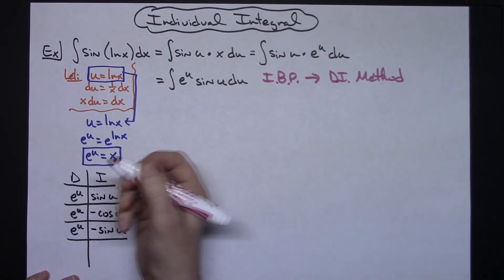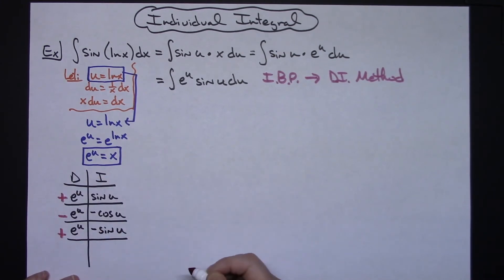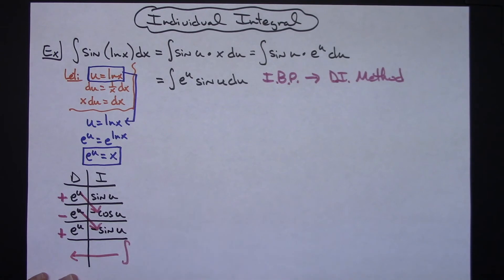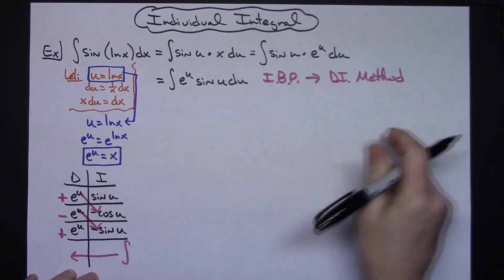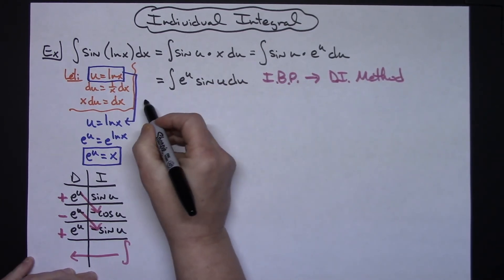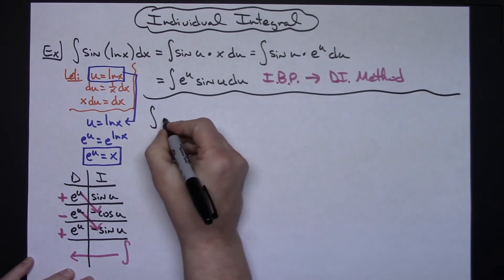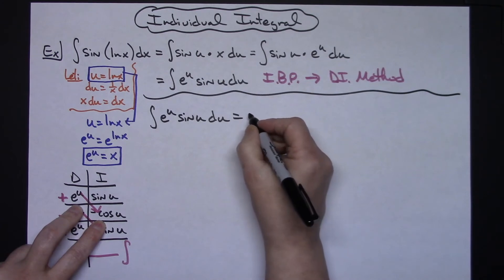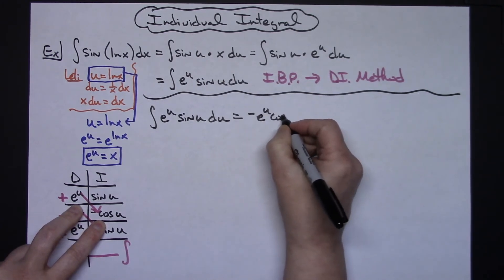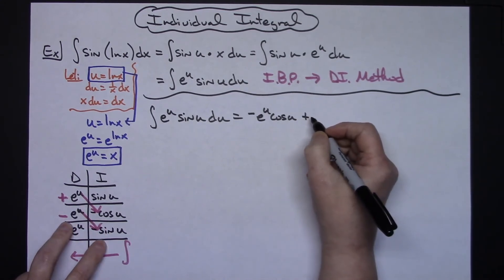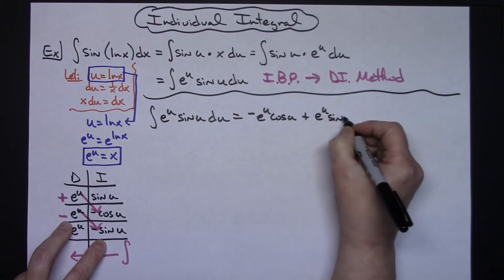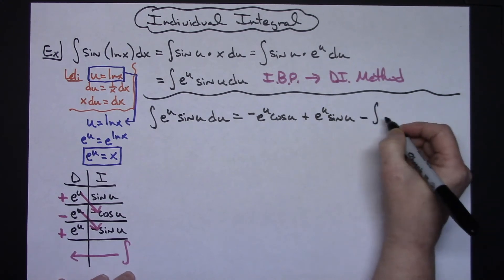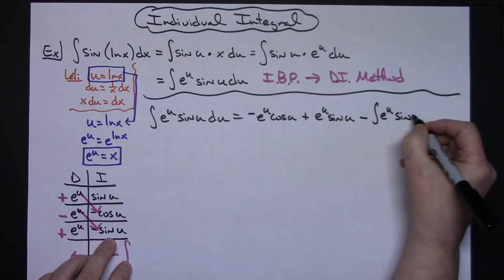To finish the shortcut method: put alternating plus-minus-plus signs down the left side, multiply diagonally, and take the integral of the last row going backwards. So the integral of e to the u sin(u) du equals negative e to the u cosine(u), plus e to the u sine(u), minus the integral of e to the u sine(u) du.